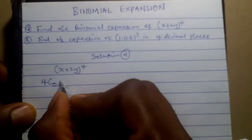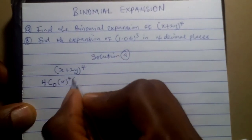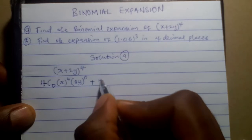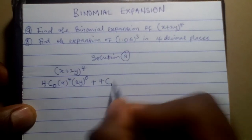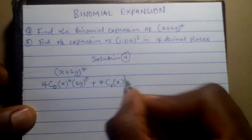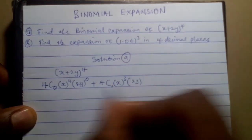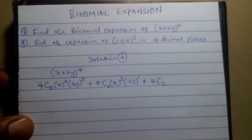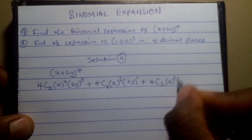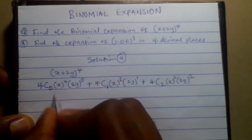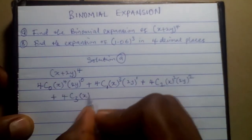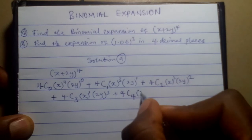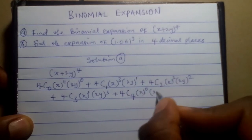The first term: 4C0 times x raised to the power 4 minus 0, which is 4, times (2y) raised to 0. Plus 4C1 times x raised to 4 minus 1, which is 3, times (2y) raised to 1. Plus 4C2 times x raised to 4 minus 2, which is 2, times (2y) raised to 2. Plus 4C3 times x raised to 4 minus 3, which is 1, times (2y) raised to 3. Plus 4C4 times x raised to 4 minus 4, which is 0, times (2y) raised to 4.